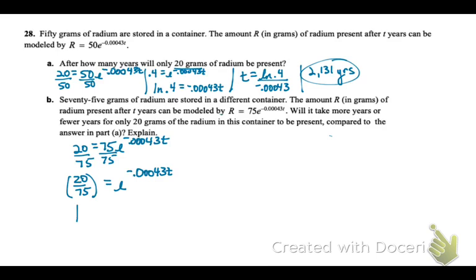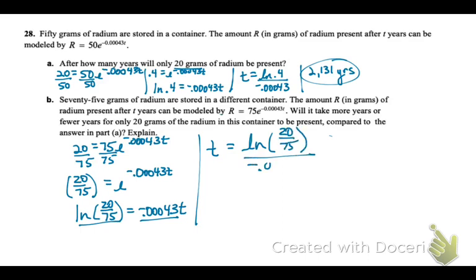0.043T. So now let's rewrite that as a logarithm. So log base e, and this is what it equals. The value goes next and then the exponent here. Now we need to get t by itself. So we're going to need to divide both sides by that crazy decimal. So on your calculator, you're going to find first the natural log LN of 20 over 75, and then divide that by your decimal. And so it's approximately 3,074 years. So it's going to take more years in this case.